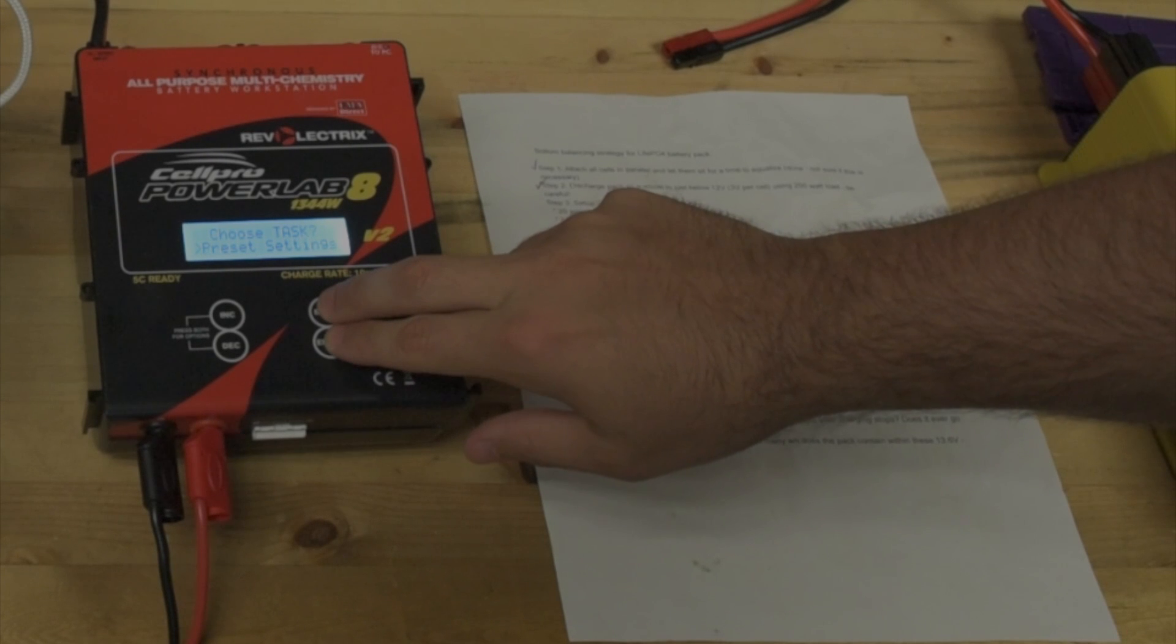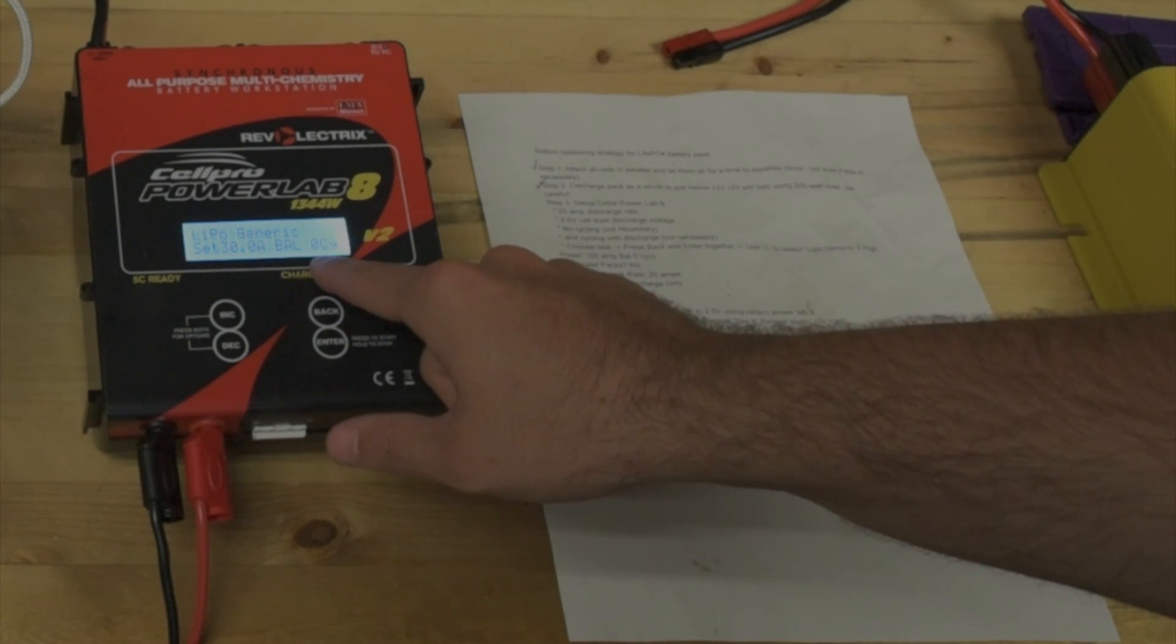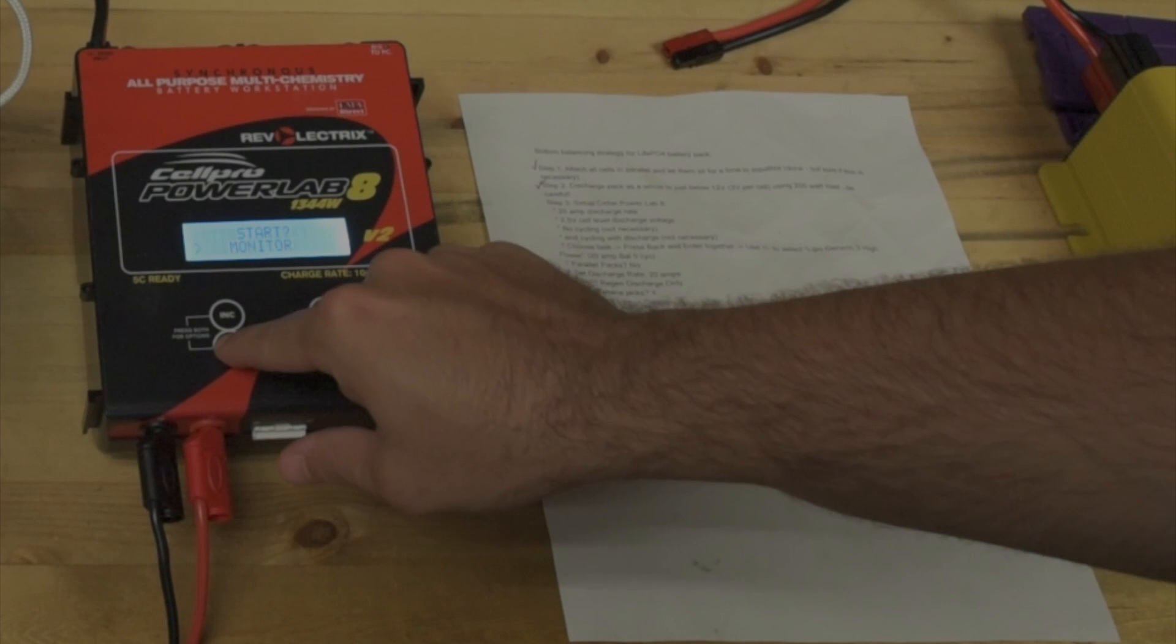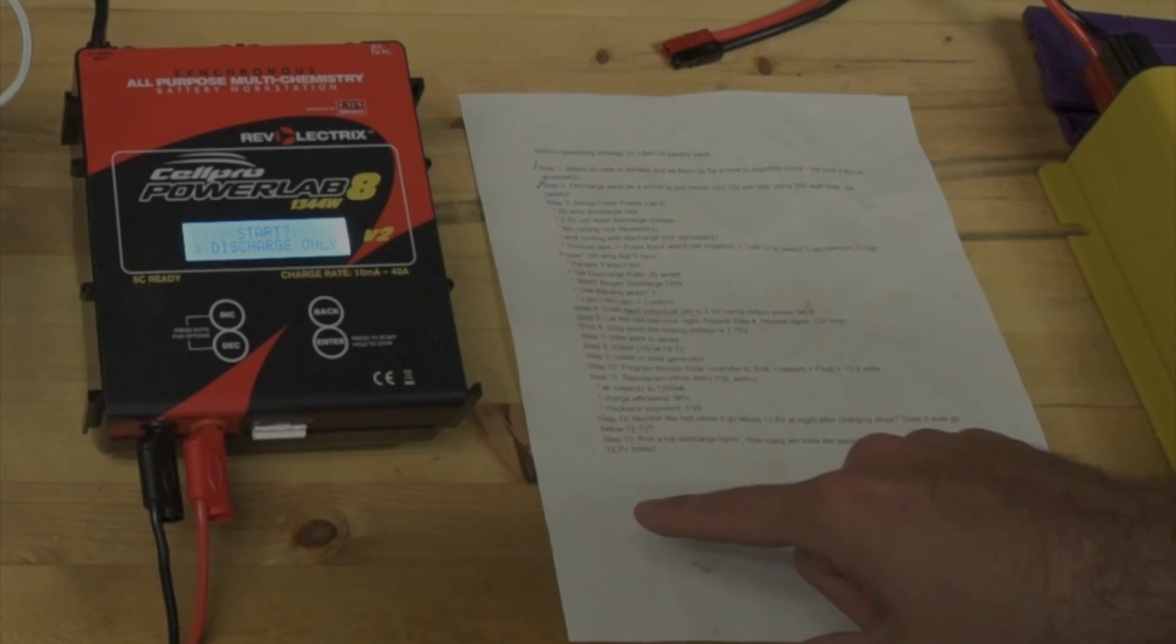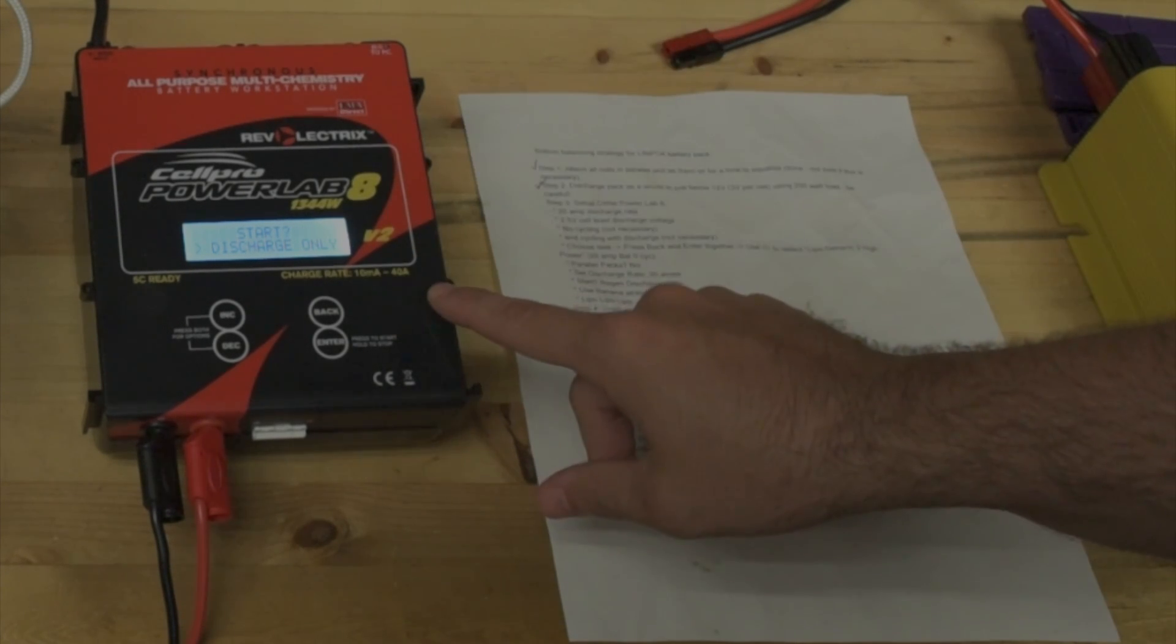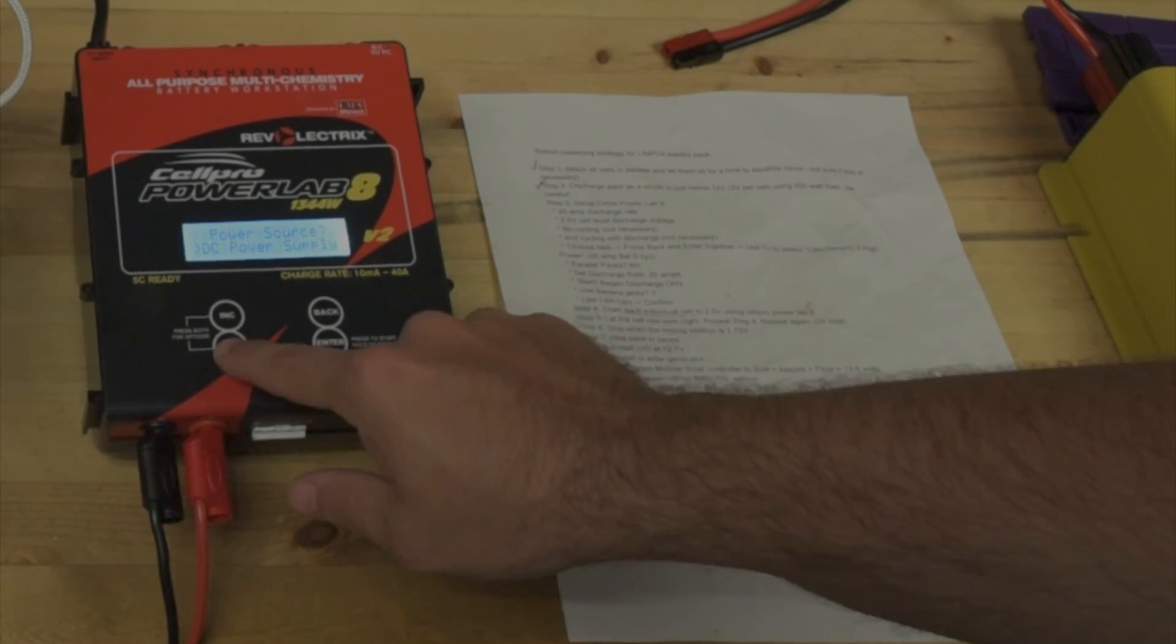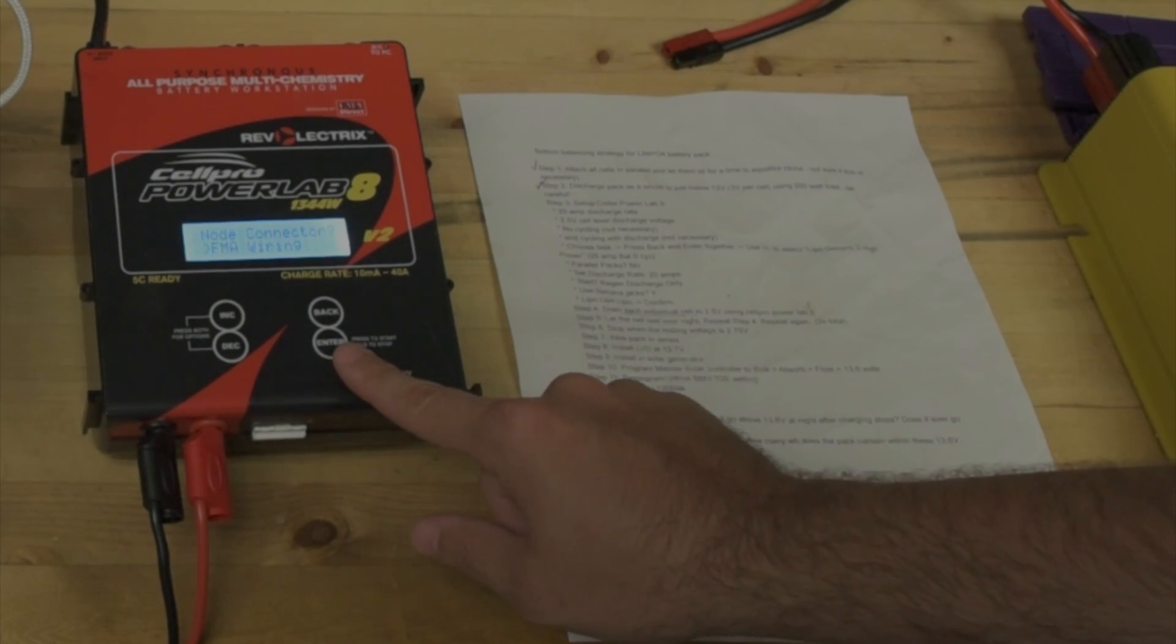Second step is to do back and enter together to start the discharge. The EV4U guy uses the LiPo generic high power profile, so we'll use that. Discharge rate 30 amps. I see that regen discharge is off by default, so let's enable it. Battery current limit, battery low cutoff, use regen discharge - yes, cool.